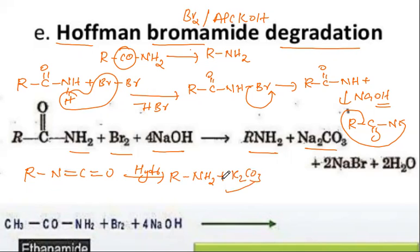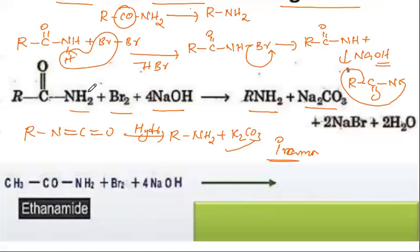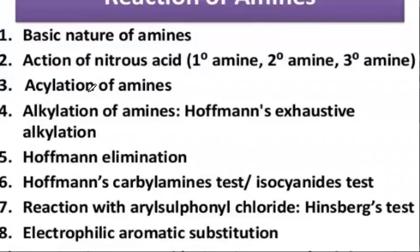This isocyanate intermediate, upon water hydrolysis, produces RNH2 (primary amine) and K2CO3. This is called the Hofmann bromide degradation method. By this method, we can prepare only primary amines. The key reagents used are bromine plus base (sodium hydroxide or potassium hydroxide). Amide degradation produces amine.